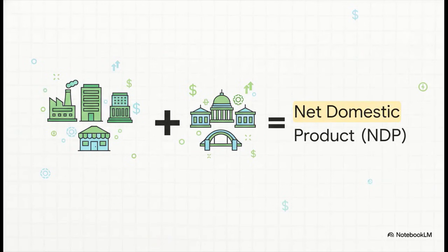So that brings us to our first big number: the Net Domestic Product, or NDP. It's actually really simple. You just take all the value added by the business sector, and you add it to all the value added by the government. That's it — it's just the sum of those two big pieces.